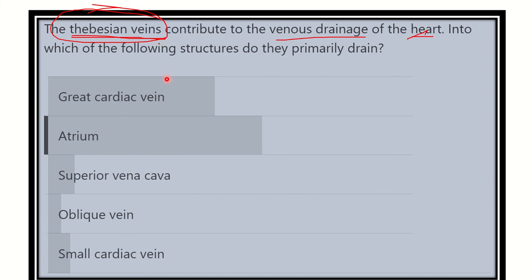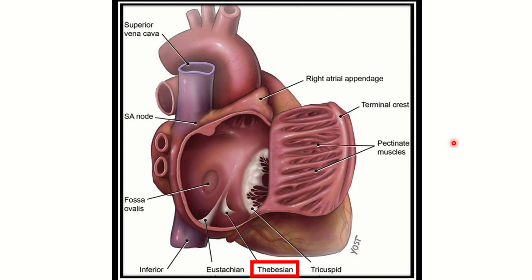Now let's look at the Thebesian vein. This one picture is enough to describe the answer to the question. We can see different structures of the heart — here is the right atrial appendage, the superior vena cava, the inferior vena cava, the SA node located just at the side of the opening of the superior vena cava, the Eustachian valve, the musculature, the terminal crest, and this vein here is the Thebesian vein.